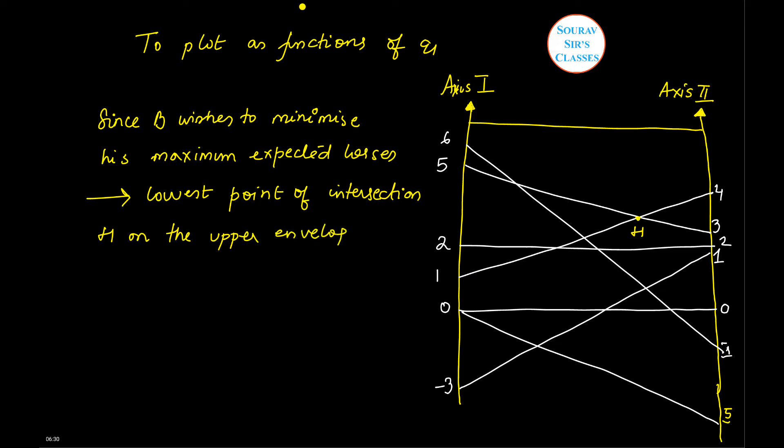Let me mark the upper envelope first for you guys. It's this region. And this is the H point. H is on the B's expected payoff equations, as is very much clear from the diagram.